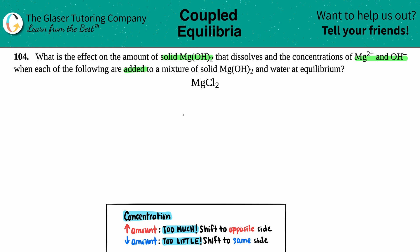They told us that we have a solid Mg(OH)2. That's a solid. And this is going to break down. It actually says at equilibrium, so we do need double arrows.